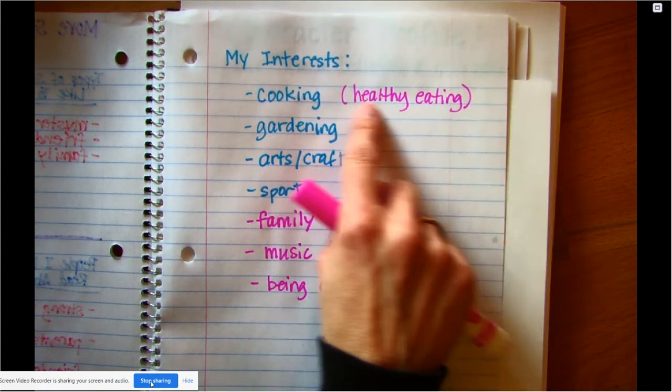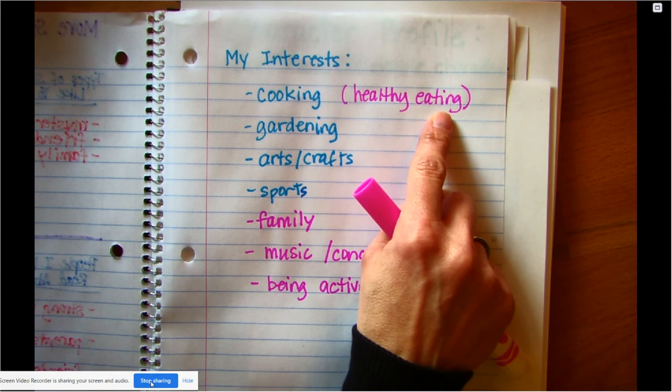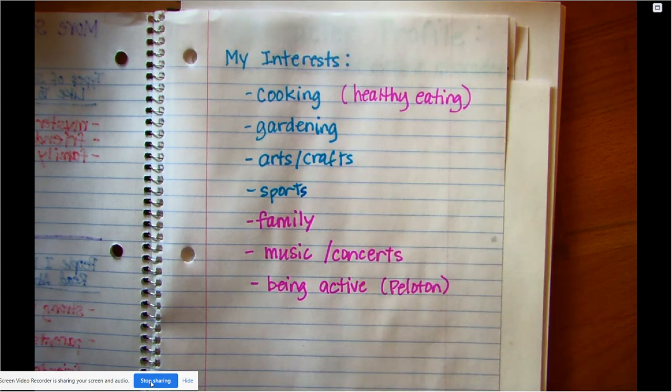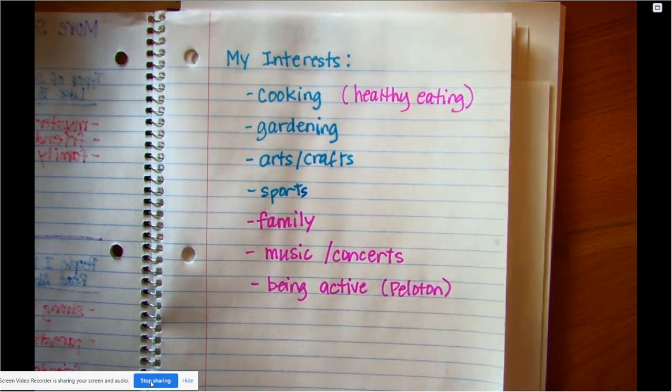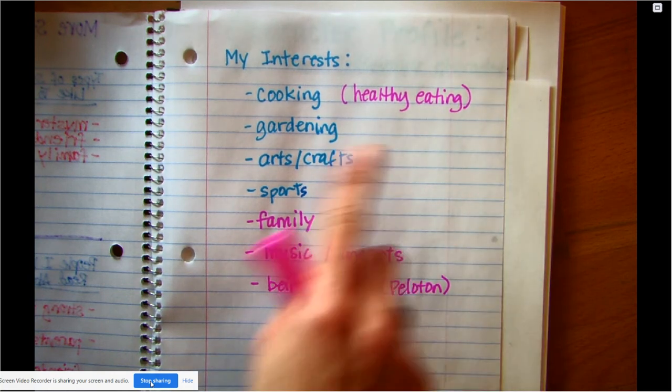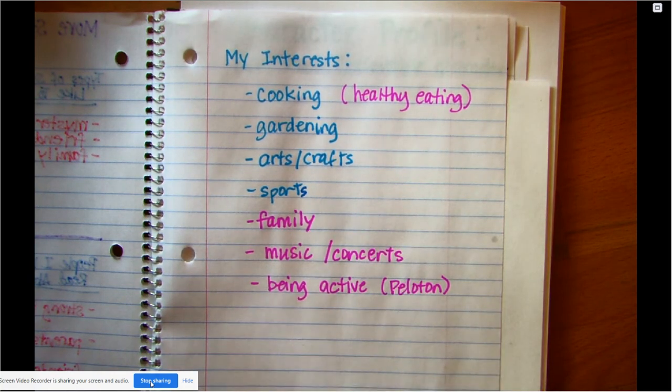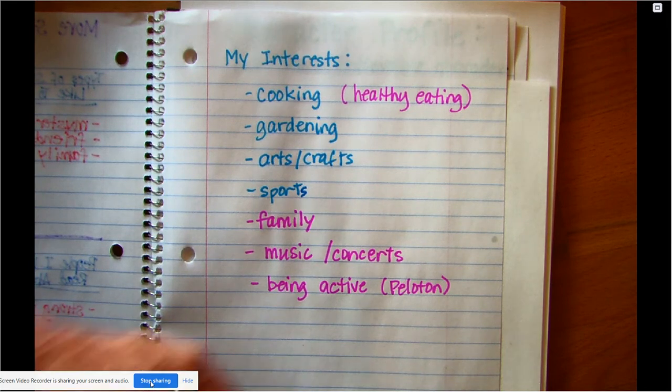And then up here next to cooking, I even wrote healthy eating because I love to eat healthy foods. One of my favorite things is kale. If you haven't tried it, you should. It's super good. Writers are always going back and adding to their ideas. You might have something that happened yesterday or over the weekend and you think, oh, that could make a great story. Add it to your list. Just because you write it down once doesn't mean you're done. Writers are constantly going back and adding things to their writing.